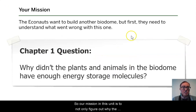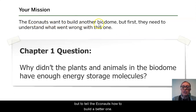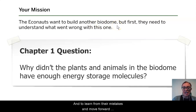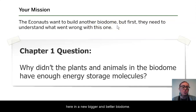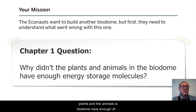Our mission in this unit is to not only figure out why the biodome ecosystem collapsed, but to tell the Econauts how to build a better one and to learn from their mistakes and move forward in a new, bigger and better biodome. In chapter one, we've been investigating why the plants and the animals in the biodome didn't have enough of those energy storing molecules.